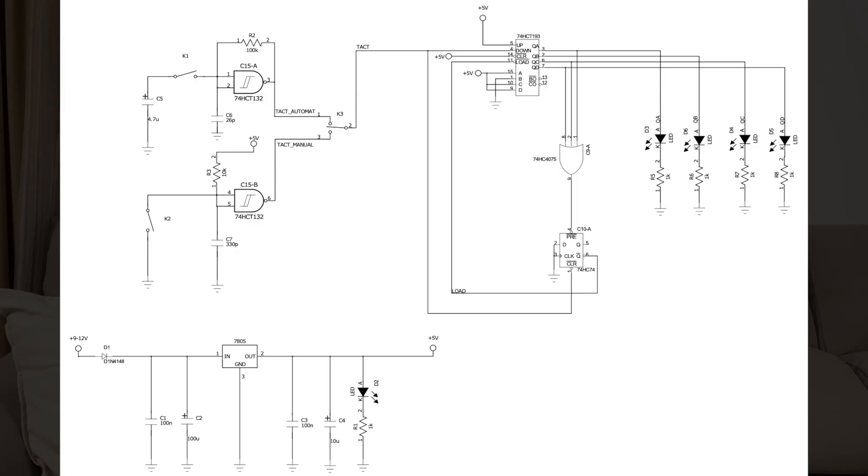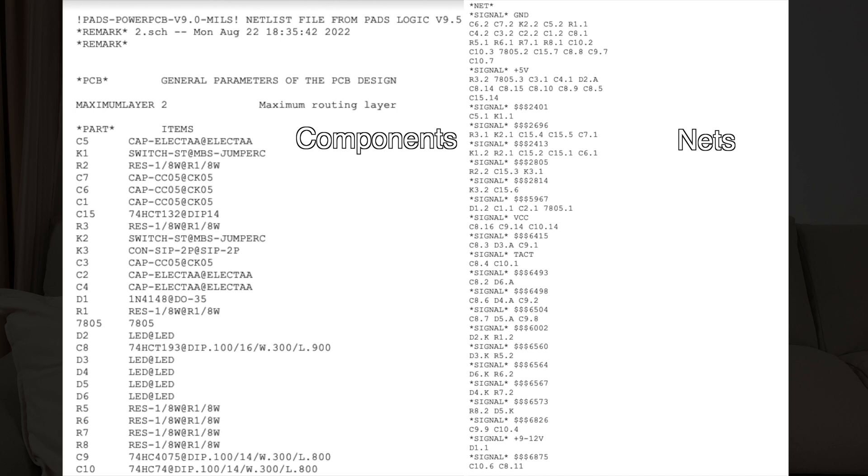Nowadays, all PCB design software have a graphical user interface where you create a schematic by dragging components around on a virtual sheet of paper and dragging between pins to create connections. At its core though, the output of the schematic is still a list of interconnections called a netlist, which we will need for the next step. While you're at it, you should also export the bill of materials — an Excel file with all of the components on your board — which you can use to order the components you'll need for populating your board later on.